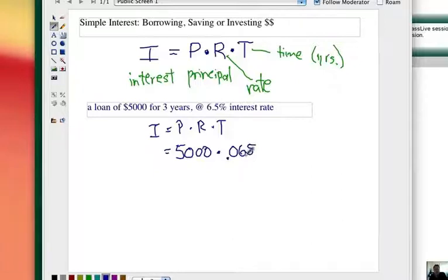Remember, the decimal point has to go from where it is, 6.5, two places to the left to get rid of the percent symbol. Time is going to be, of course, three. That's in terms of years. Now it's just a simple multiplication problem. You're going to get $975.